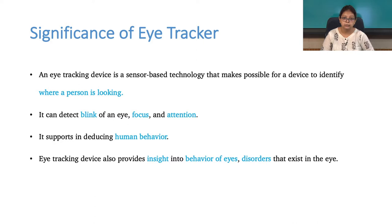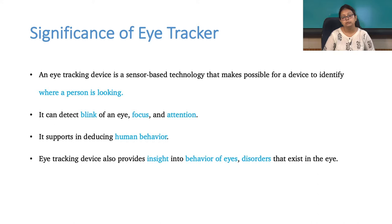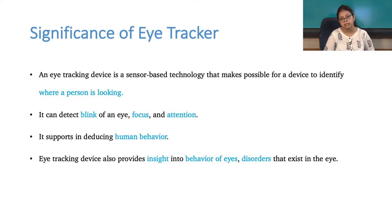An eye tracker is a sensor-based technology that, in layman's language, helps you identify where a person is looking at. Additionally, it gives information about an individual's eye — it can detect blinks, provide information related to focus or attention, and help researchers deduce or derive human behavior. Eye tracking devices also provide significant insights into identifying the behavior of eyes and any dysfunctionalities or disorders present in the eye.